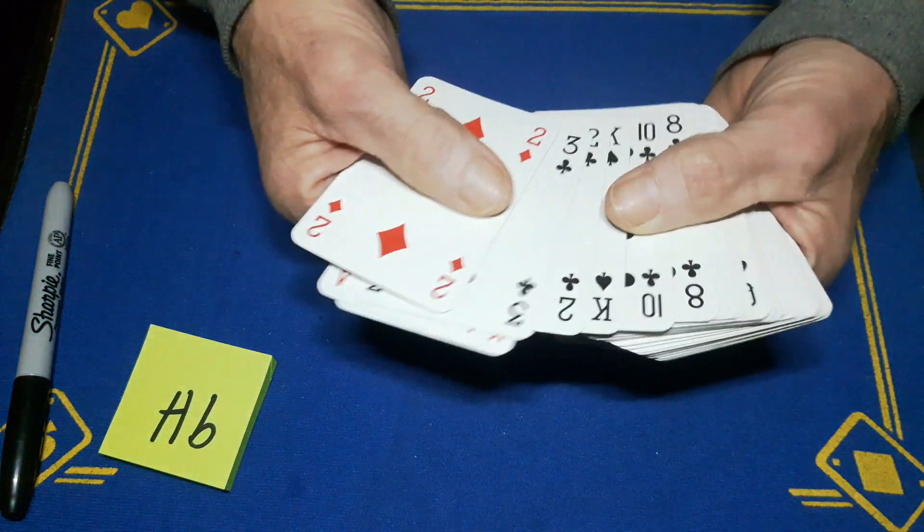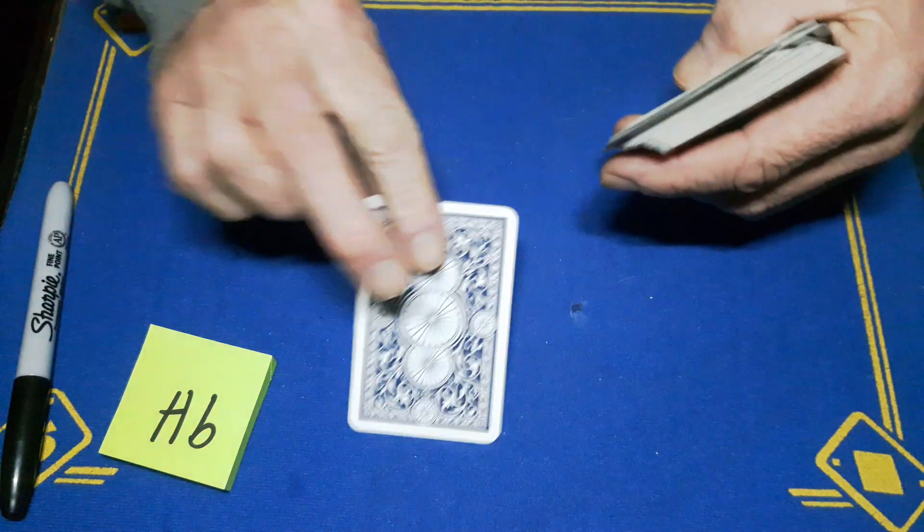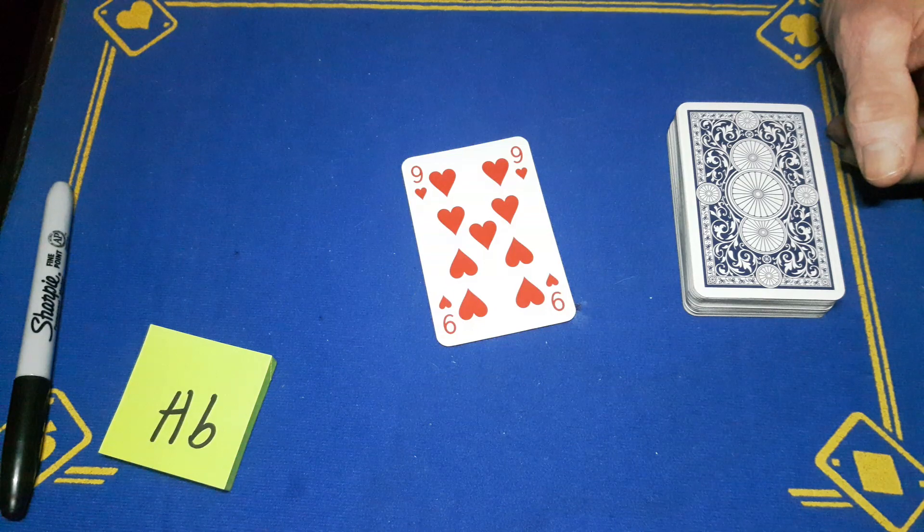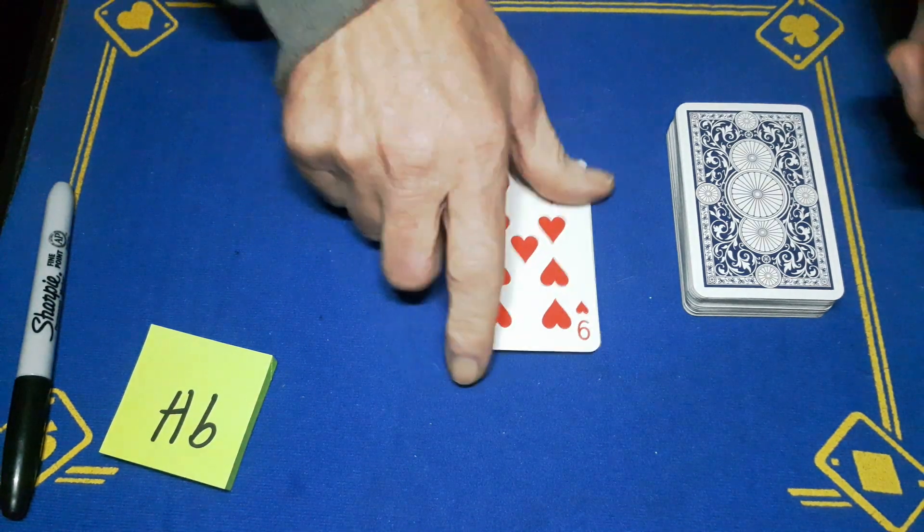All you're going to do is go through the packet, find the nine of hearts, pull it out, put it on the table. They will be absolutely amazed that you actually got the predicted card. Well, not the predicted card, but the card they saw.